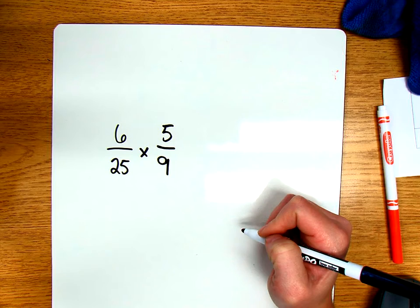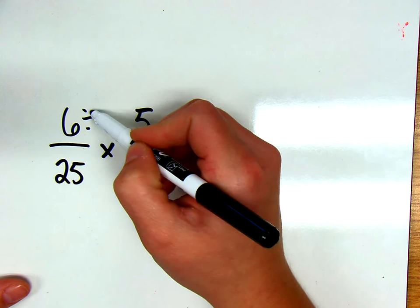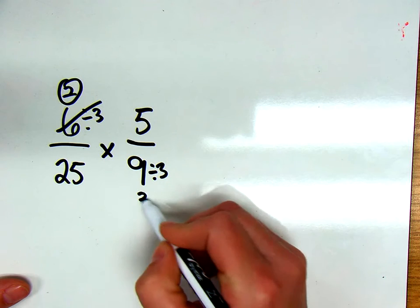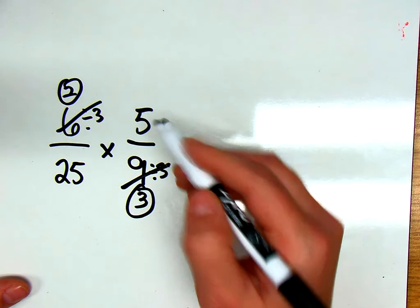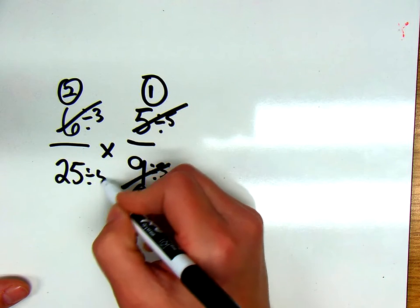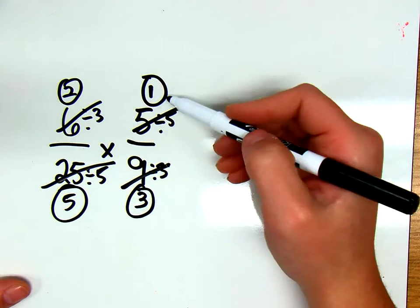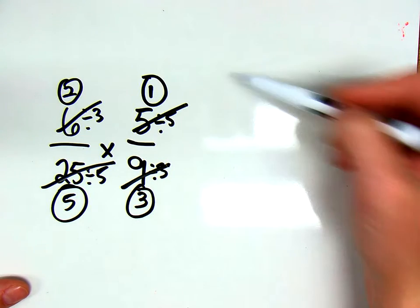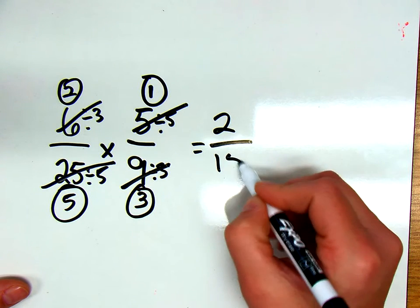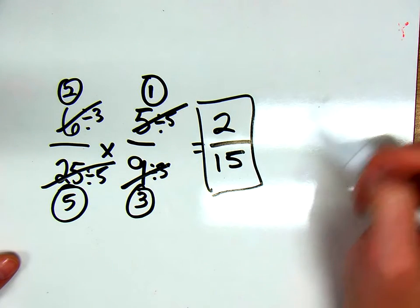We would always try to do some cross-simplifying, so we would look at this and go, I can do 6 divided by 3 and I can do 9 divided by 3, so this would become 2 and this one would become 3. Going the other way, we should recognize both of these can be divided by 5 - this becomes 1, this one becomes 5. Once we've simplified everything, we can only simplify the number on top with a number on the bottom. We're going to multiply straight across and that would give us an end answer of 2/15.